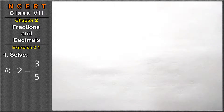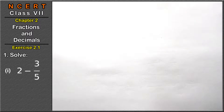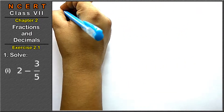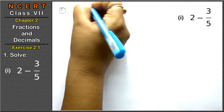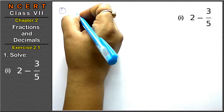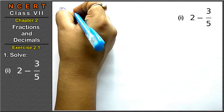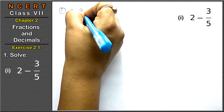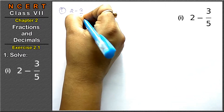Hello friends, welcome to Learn Maths. Today we will do the second chapter, that is Fractions and Decimals of Class 7th NCERT. The first question of Exercise 2.1 is: solve 2 minus 3 upon 5.